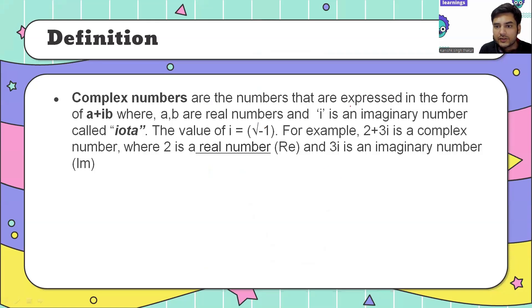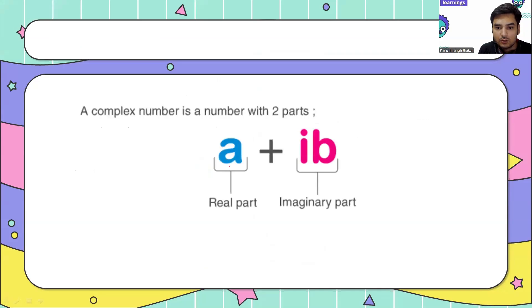So this was just a hint of a complex number. Complex numbers are the numbers that are expressed in the form of a plus ib, where i is an imaginary number and I call it as iota. So 2 plus 3i - this is the real part, this is the imaginary part.